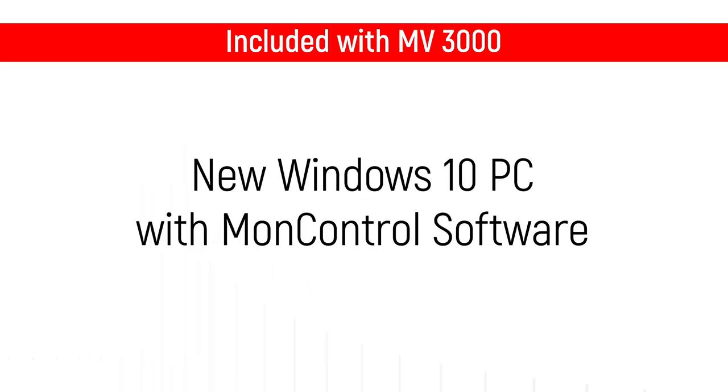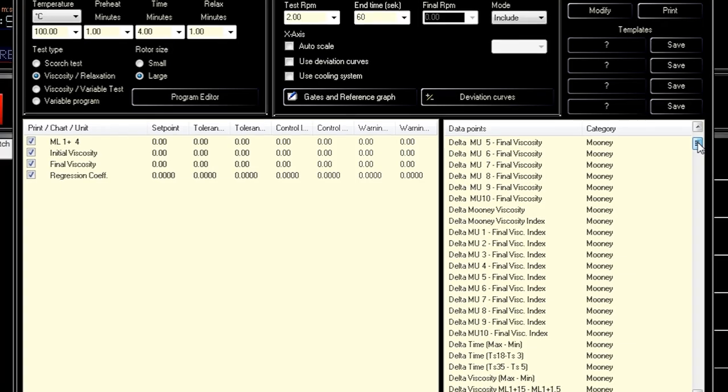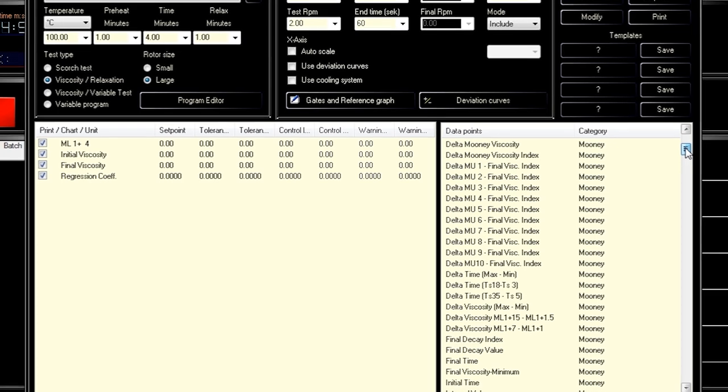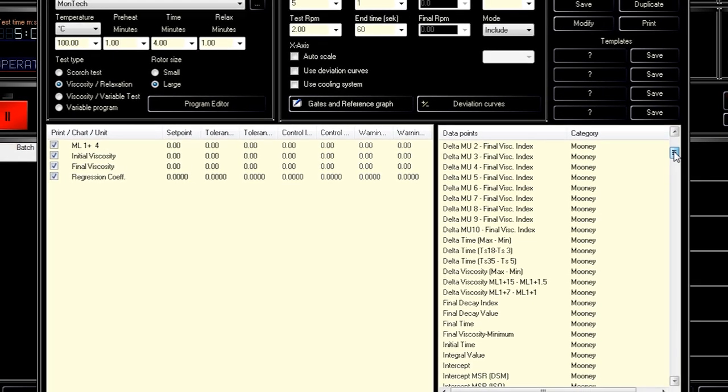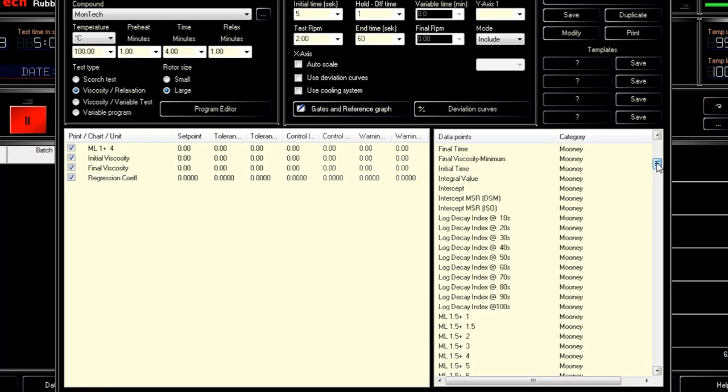The MV3000 comes with a new Windows 10 PC with MonControl software to create and execute test sequences, then record the results. Customizable test parameters are preloaded into MonControl, allowing users to easily select a test and begin testing with the push of a button.